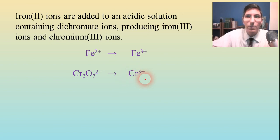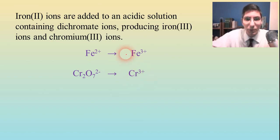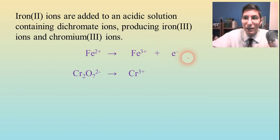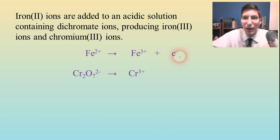Now we're going to have to balance these. The first one looks pretty easy to balance — we just need to put one electron over here on the right side, and that balances the first half reaction. So that seems to be a very simple oxidation — it's just losing an electron.